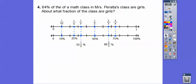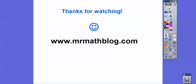About 64% of Mrs. Peralta's math class are girls — about what fraction of the class are girls? Here 60% corresponds to six-tenths, but 64% is a little closer to two-thirds on the number line, so about two-thirds of the class are girls. Alright, I hope that makes sense — take care.